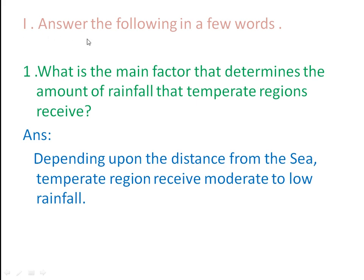First section: answer the following in a few words. First question: what is the main factor that determines the amount of rainfall that temperate regions receive? Depending upon the distance from the sea, temperate regions receive moderate to low rainfall. This is the main factor that determines the amount of rainfall that temperate regions receive.